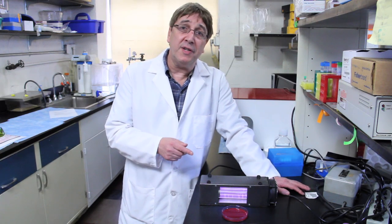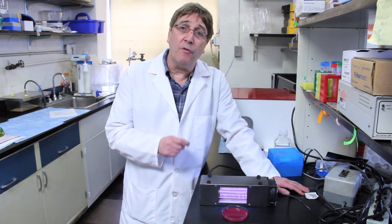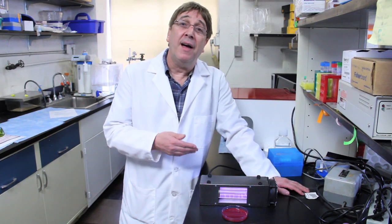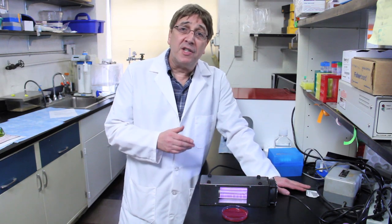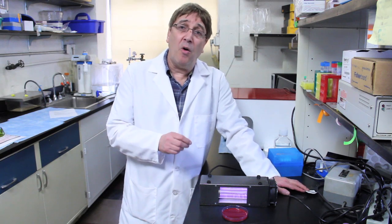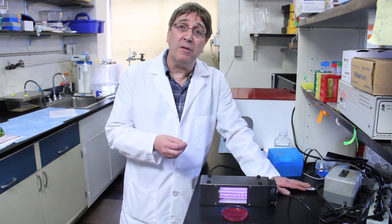This excimer lamp produces ultraviolet radiation of one particular wavelength, and that's about 207 nanometers. What's special about this particular wavelength is that while it kills bacteria very efficiently, it is very strongly absorbed in biological materials.